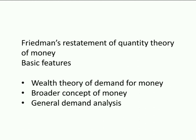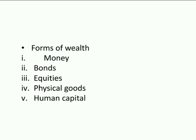It is a general demand theory — the general theory of consumer goods can be applied to the demand for money. Friedman assumes the tastes and preferences of money holders are constant, and money is subject to the law of diminishing marginal rate of substitution. For Friedman, wealth consists of anything capable of generating an income stream. He distinguished five forms of assets: money, bonds, equities, physical goods, and human capital.